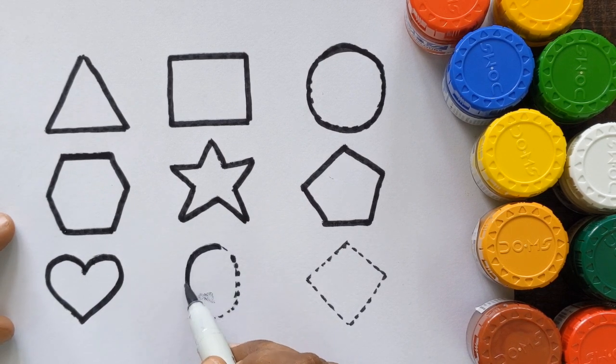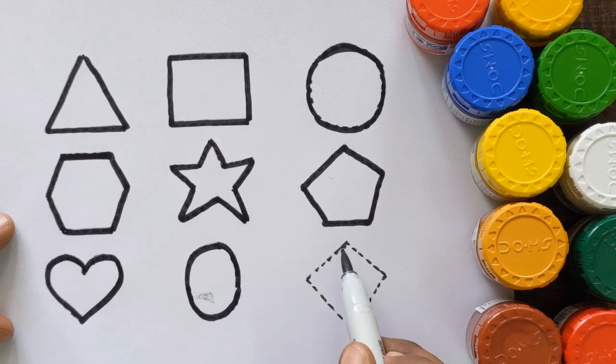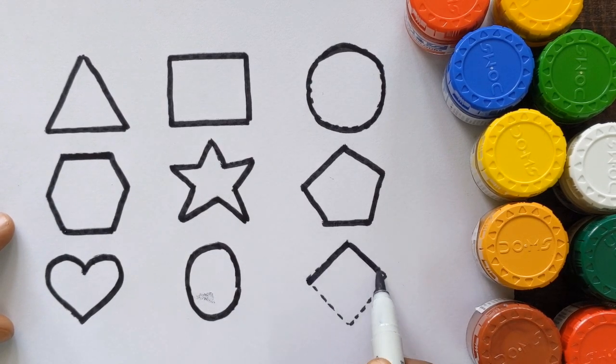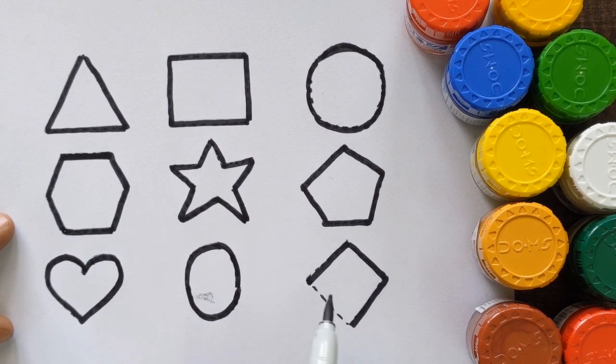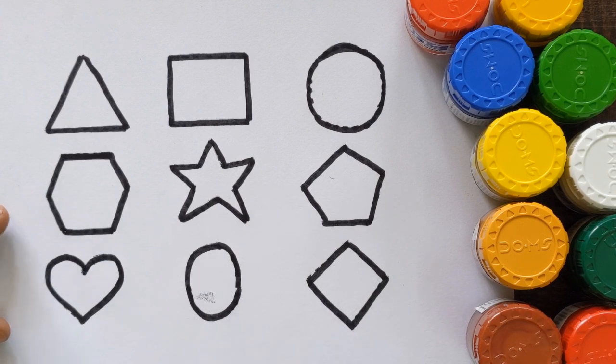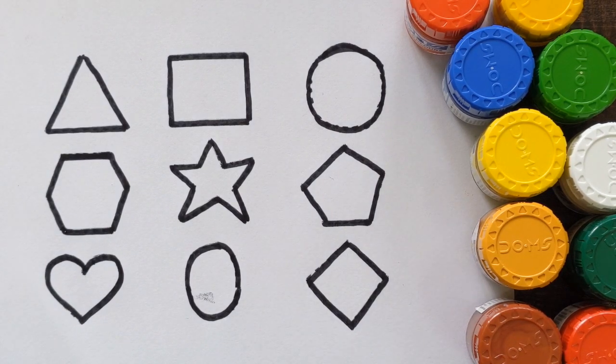Heart, Oval. And which shape is this? Rhombus. Let's color the shapes now.